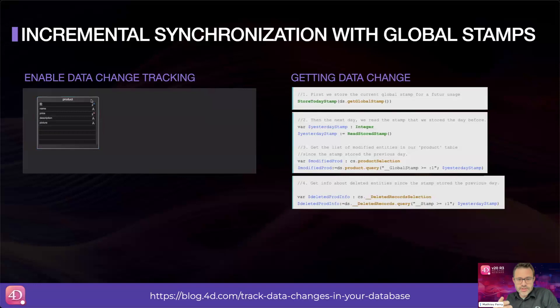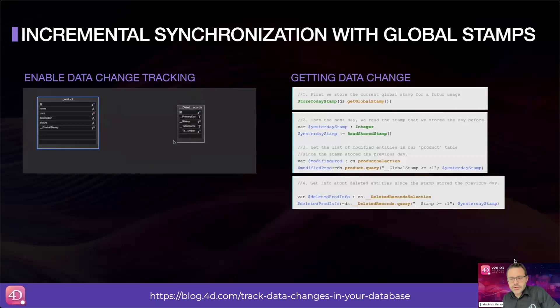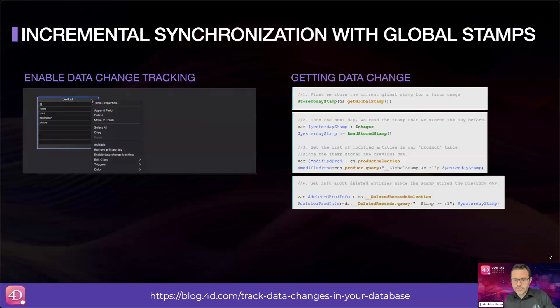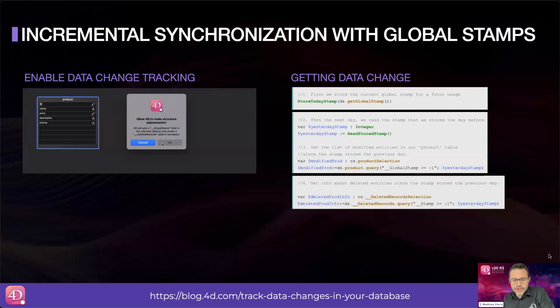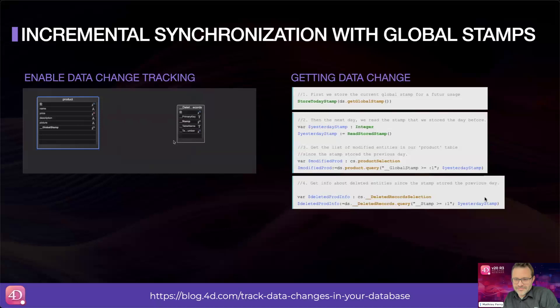Then in step four, you are ready to synchronize. There is also a simple way to retrieve the deleted entities for that table from the previous global stamp. This feature puts you in control in a world where precise and fast data synchronization is often crucial. You can use it, for example, to incrementally synchronize two 4D applications — the second server can query the first one via REST or through a remote data store.